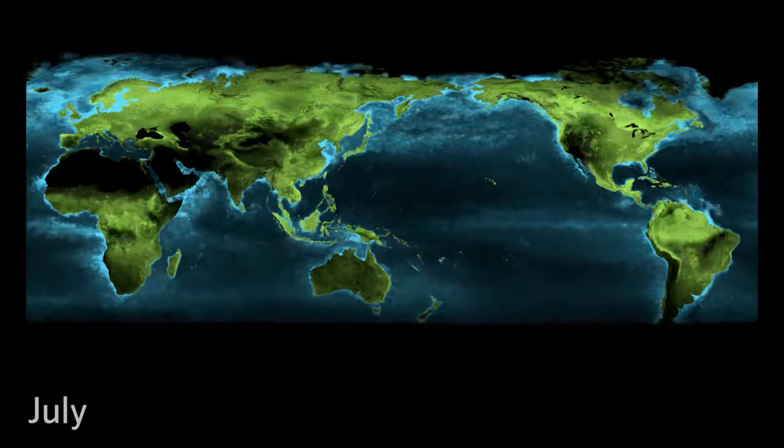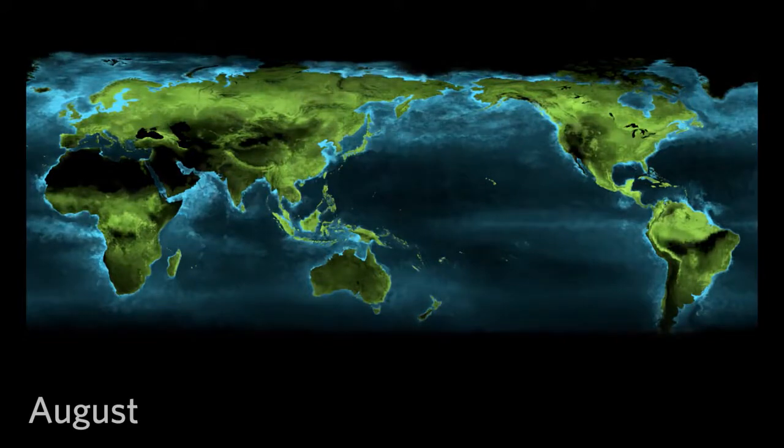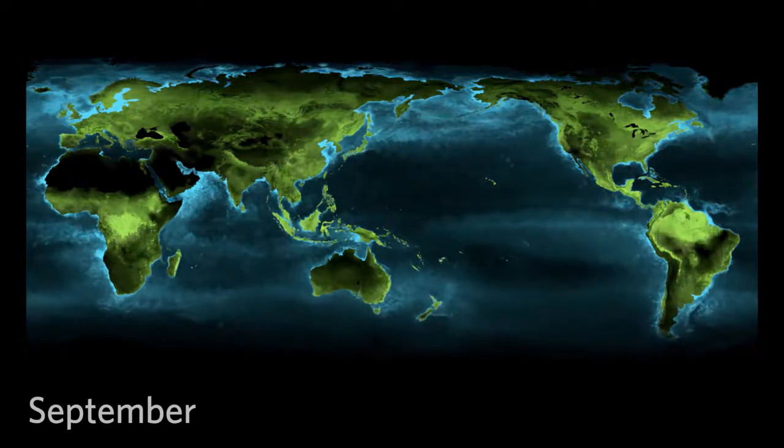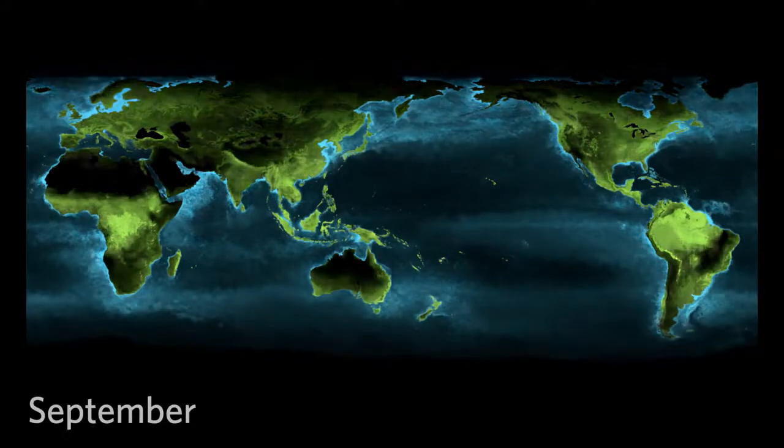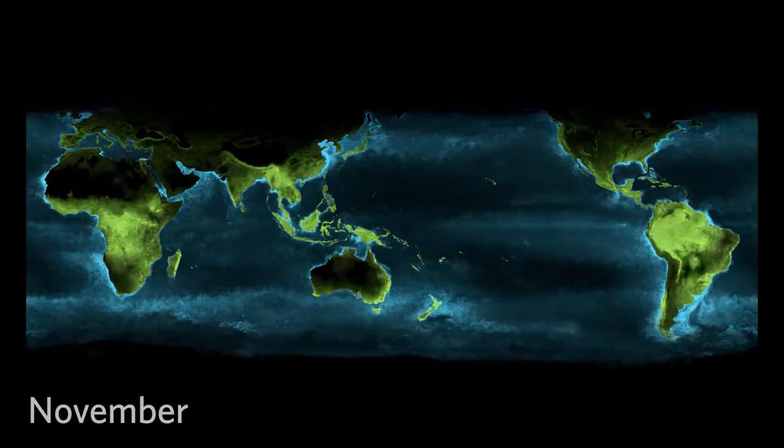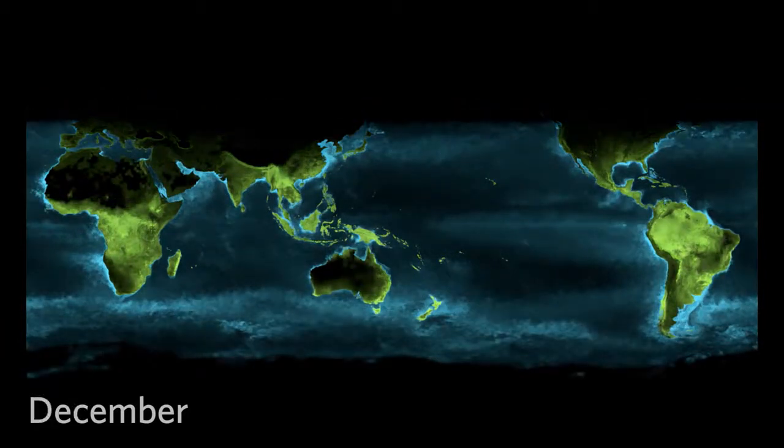On land, forests grow green during the spring, brightening the continents. During winter, continents in this view turned dark from a lack of photosynthesis.